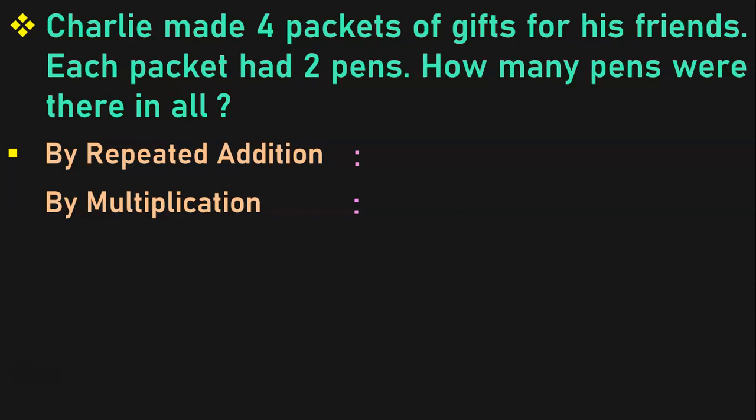We know that repeated addition is multiplication. Let us understand this sum now. Charlie made 4 packets of gifts for his friends, and each packet had 2 pens. So to find the total number of pens by repeated addition method, we should add 2, 4 times because there were 4 packets and each packet had 2 pens. So, 2 plus 2 plus 2 plus 2. We are adding 2 four times. 2 plus 2 is 4, 4 plus 2 is 6, 6 plus 2 is 8.